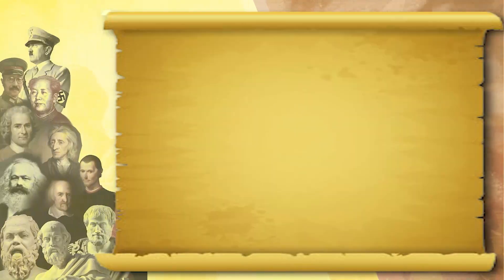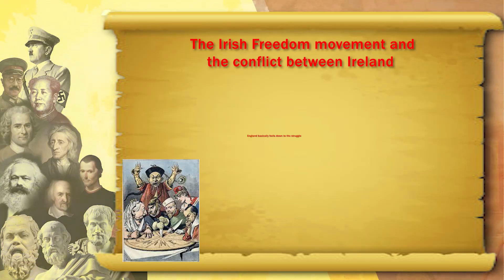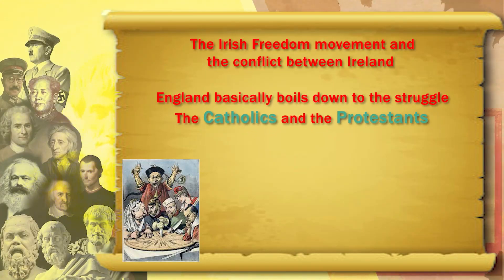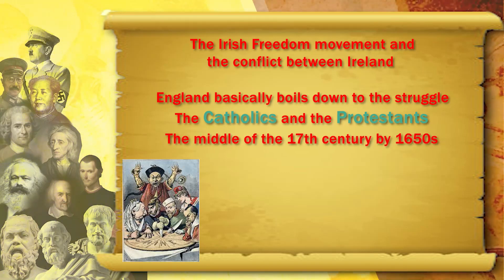Even today we find the problem of Ireland and England. England is Protestant — Anglican Church — but Ireland is Catholic. The Irish freedom movement and the conflict between Ireland and England basically boils down to the struggle between Catholics and Protestants. It all comes to a head in the middle of the 17th century, by 1648, with all the kings of Europe involved — this is the period called the Thirty Years War.